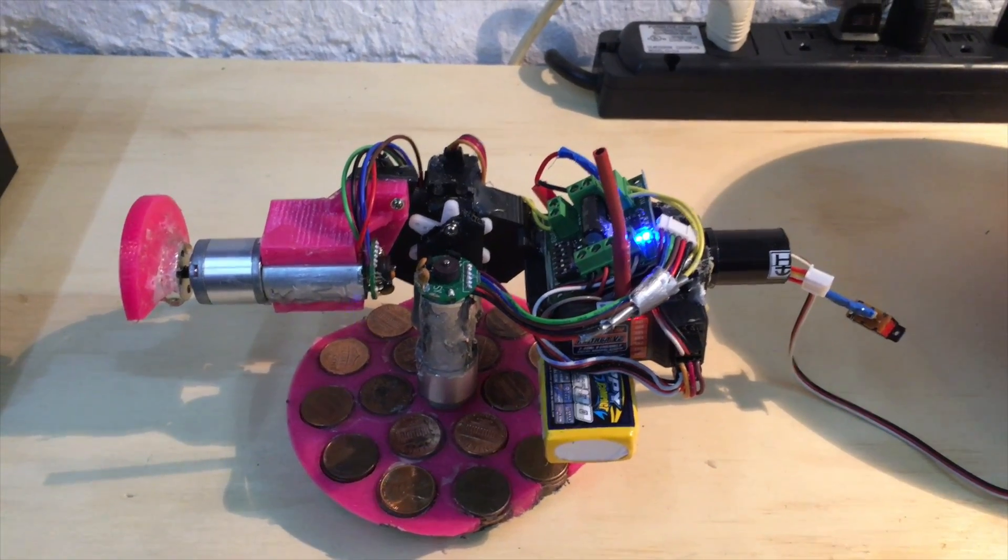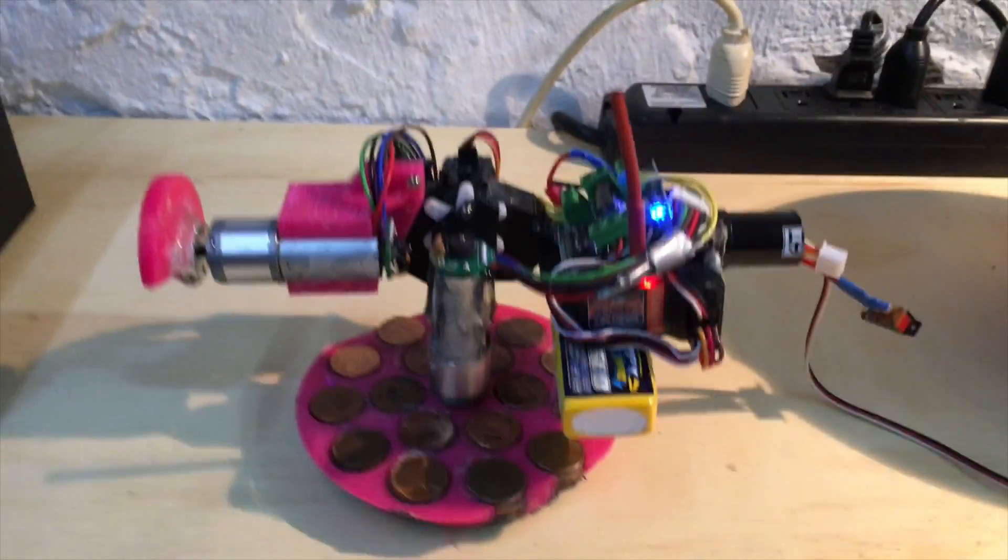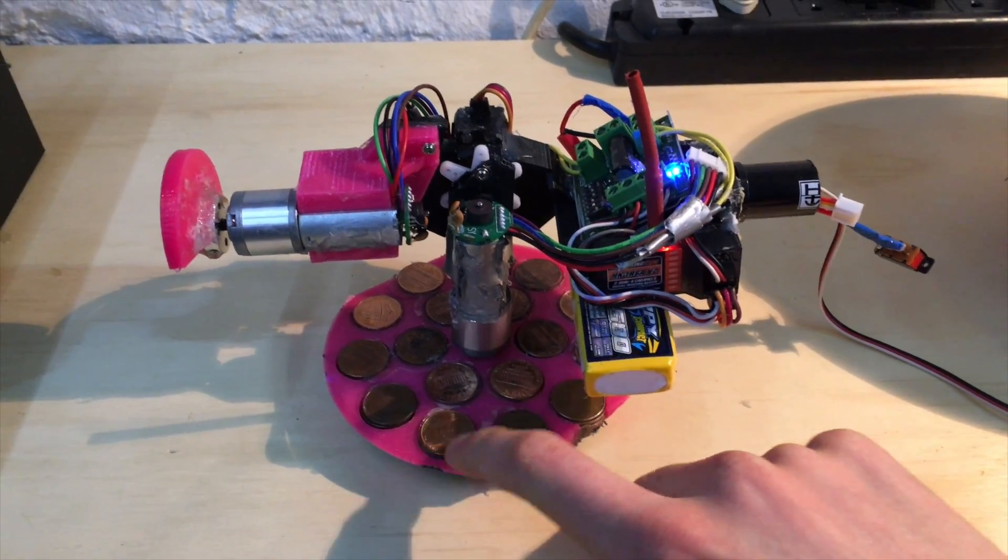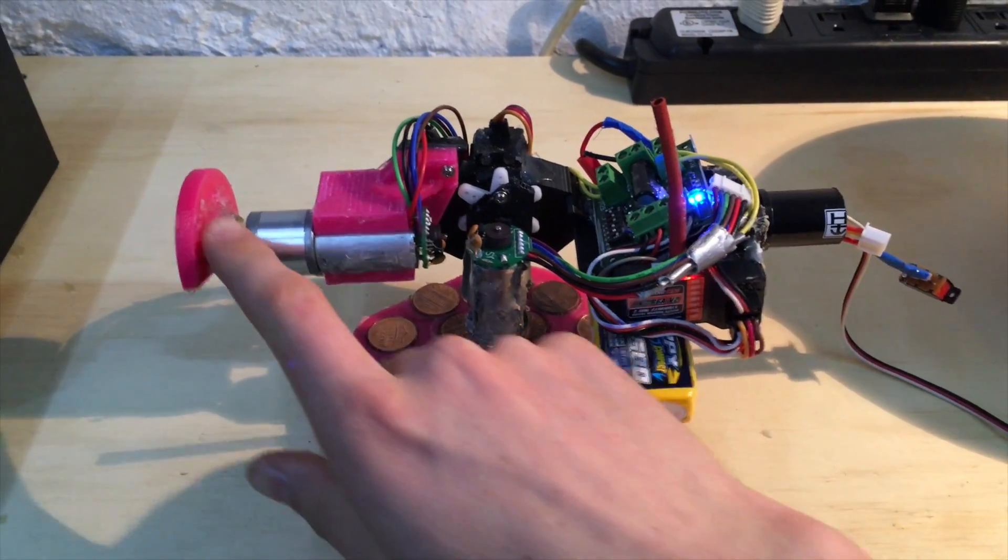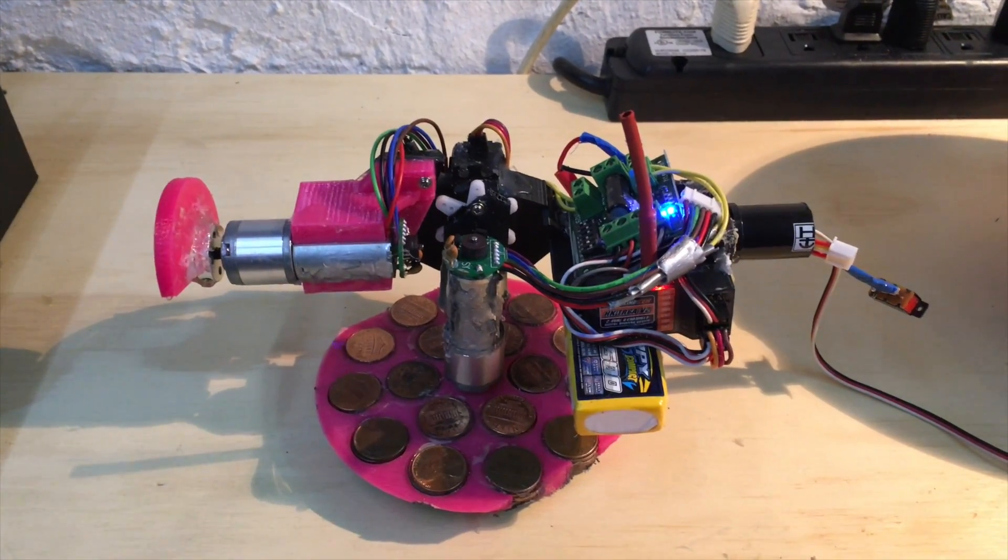This is my second attempt at building a BB-8 droid and here are the internals. If you've seen the first video then these should be really familiar. I've got a pendulum at the bottom that can rotate and swing side to side and then I have a drive motor with a hub that attaches to the external shell.